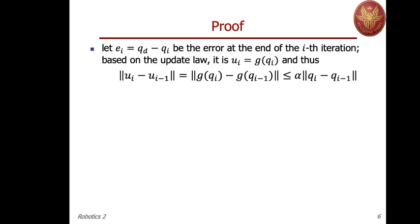The proof uses the concept of contraction mapping. Let's define Eᵢ as the error reached at the end of the i-th iteration, so Qd − QI. We know that at the end of each iteration, the update equals the gravity acting at that final configuration QI. So if we make the difference between two updates, Uᵢ − Uᵢ₋₁, this will be the difference between G(Qᵢ) and G(Qᵢ₋₁), and by the bound on the gradient of the gravity vector, this will be less or equal to α times the norm of the difference between these two configurations.